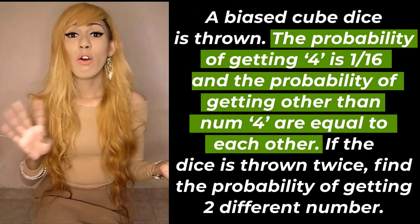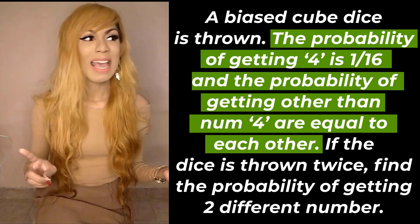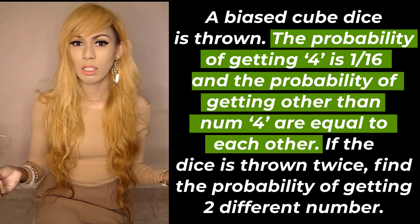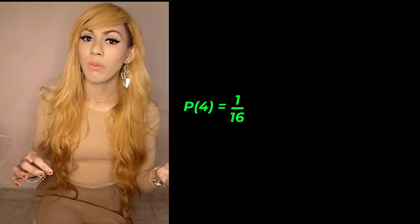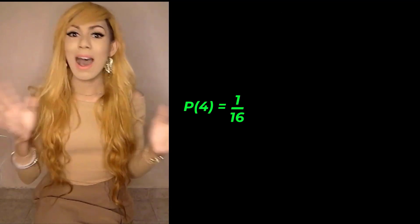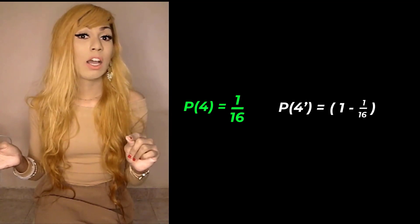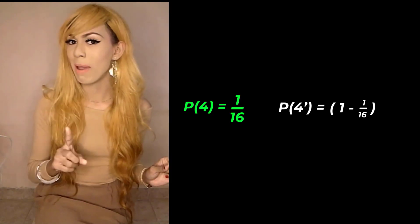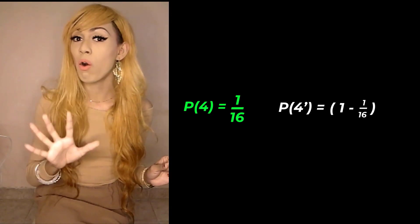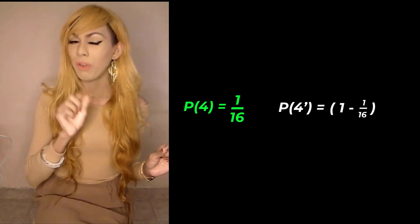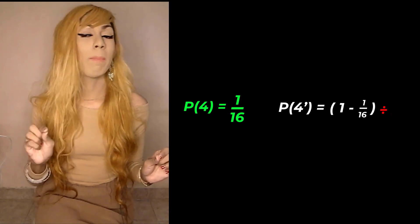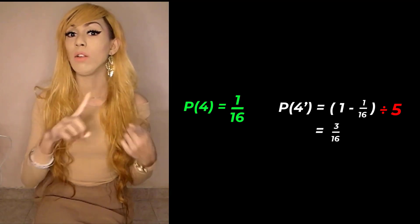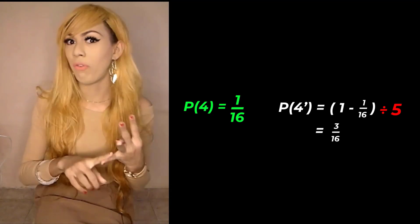The probability of getting four is actually one over sixteen, and the probability of getting any number other than four is equal for each of those values. To find that, we take one minus one over sixteen, which gives us fifteen over sixteen. We then divide by five — the five remaining sides — to get three over sixteen. So the probability of getting one, two, three, five, or six is three over sixteen.